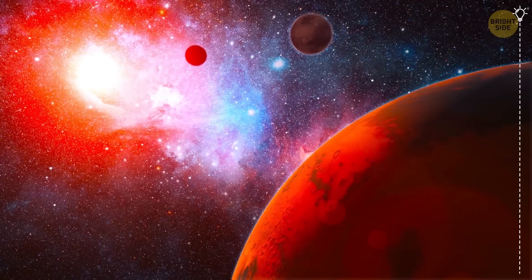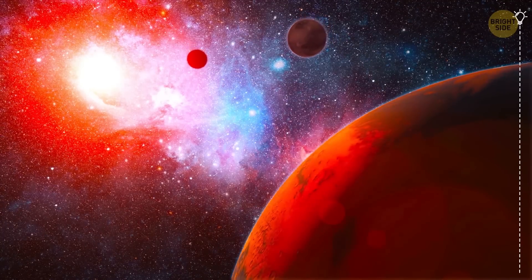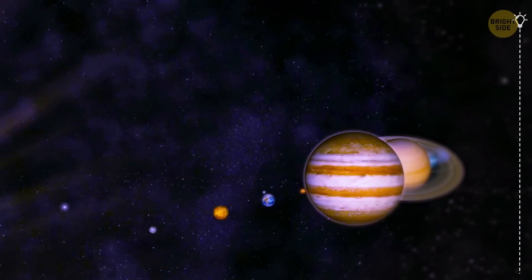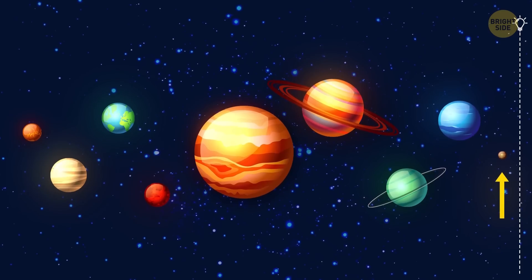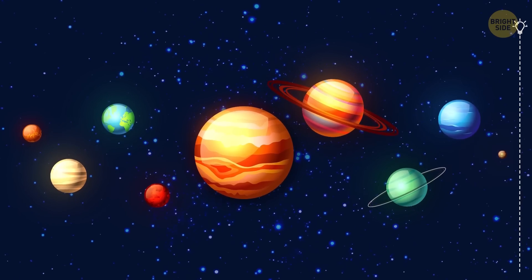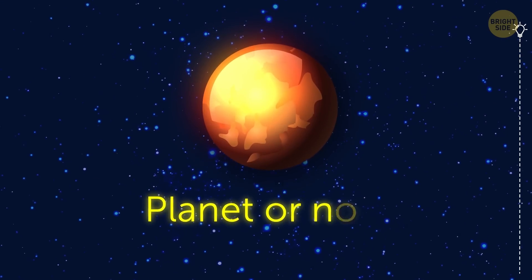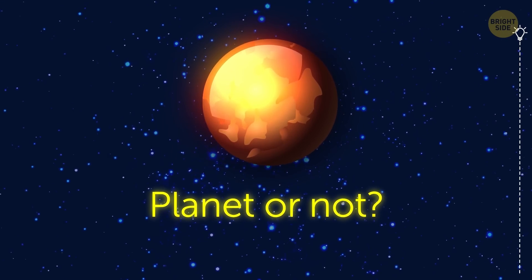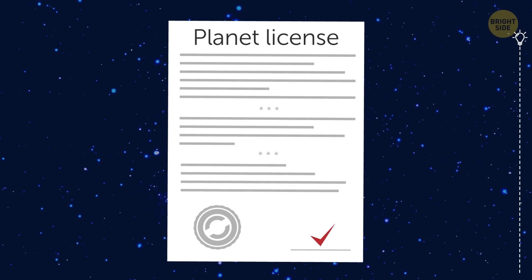Impossible planets may be a lot closer to us than you think. How about our own solar system? You know all that buzz going on around Pluto? At one time, it's a planet, and then suddenly it's not. What happened here? Did Pluto forget to renew its planet license or something?